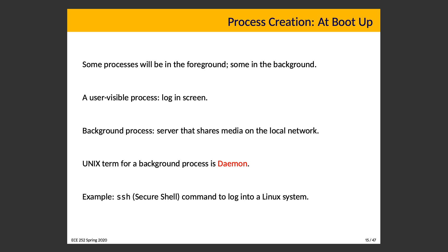There are also background processes which you don't interact with directly but can interact with using some client. If you have a server that shares media on the local network, that's a background process. The Unix term for this background process is daemon. A good example is the Secure Shell daemon. If you want to log into a system like ECUbuntu, you use your SSH client. On the receiving side, there is a background process — the Secure Shell daemon — awaiting incoming connections. When you connect, your SSH client connects to the remote SSH daemon, which responds by asking for your username and password and verifying them before connecting you to a session.